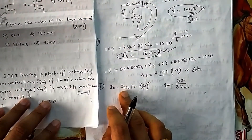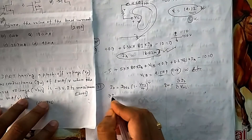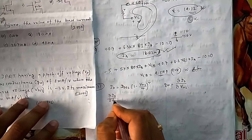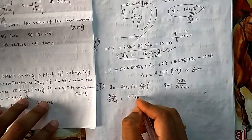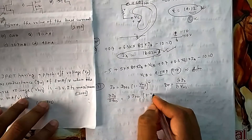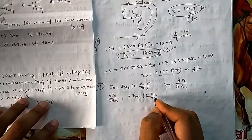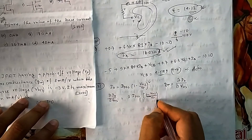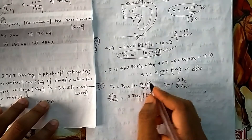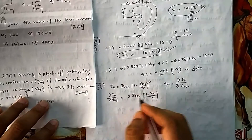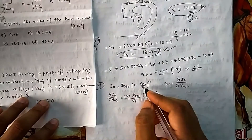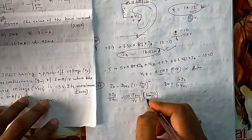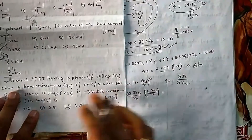Differentiating the JFET I_D formula with respect to V_GS gives: g_m = (2 × I_DSS / |V_P|) × (1 − V_GS / V_P). The same formula applies for depletion MOSFET. The given conditions are: g_m = 1 mA/V at V_GS = −3 V, and V_P = −5 V.